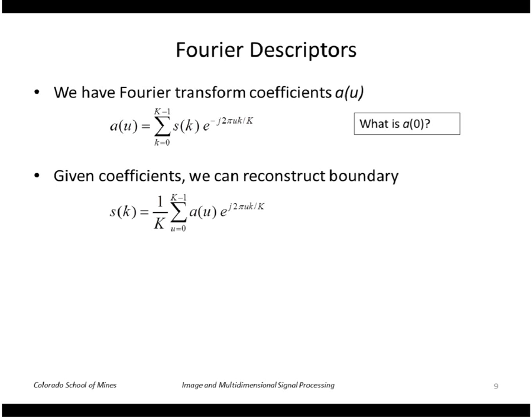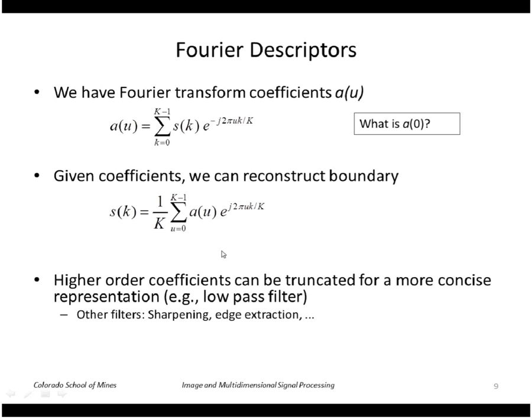We can always reconstruct the boundary by taking the inverse Fourier transform as shown here. And we can truncate those coefficients, the Fourier descriptor coefficients, to obtain a more concise representation. Essentially, that's a low-pass filter of the shape. Or if we want to, we could actually do a high-pass filter or sharpening of it.